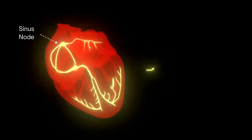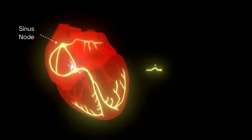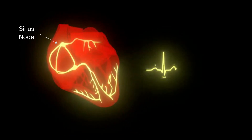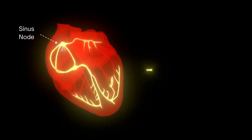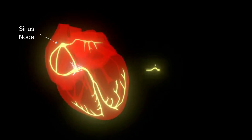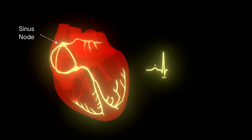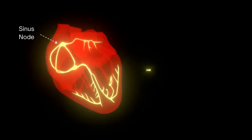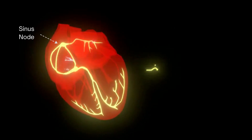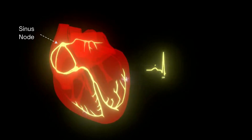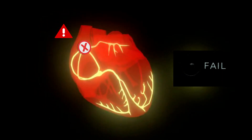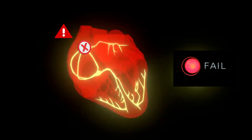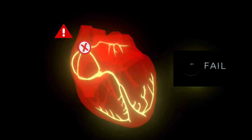First, we need to understand the sinus node itself. The sinus node, also called the sinoatrial node, is a small group of pacemaker cells located in the upper right atrium of the heart. It generates electrical impulses that set the pace for the heart, typically 60 to 100 times per minute. When the sinus node works properly, every heartbeat starts here. But what happens if and when it fails? That's the topic for today's lesson.